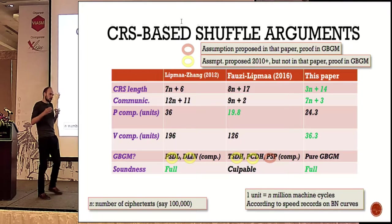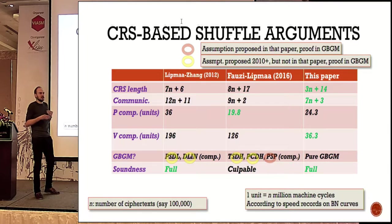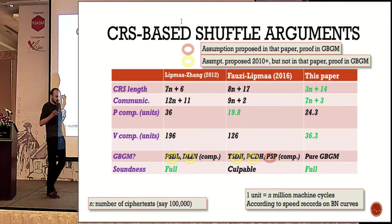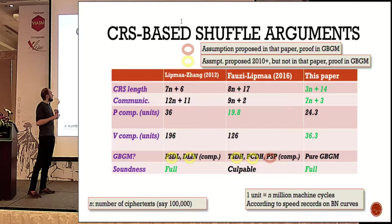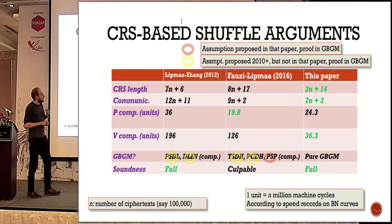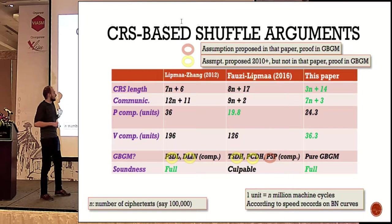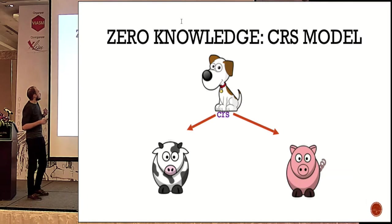Shuffle arguments are quite complicated. Known assumptions about bilinear groups are usually not enough — they don't fit well because they are too simple and don't give us all the properties we need. Up to now, shuffle arguments typically use quite new bilinear pairing assumptions or even introduce new ones. We get rid of these assumptions by working in the pure generic model.